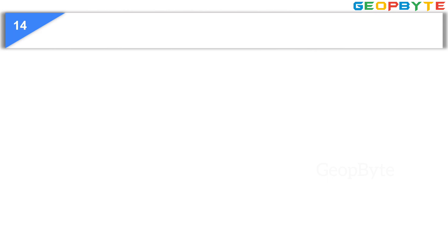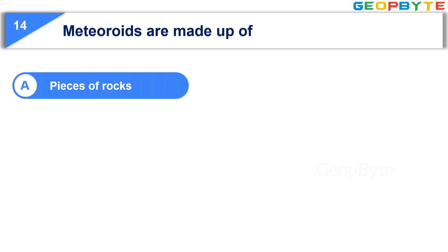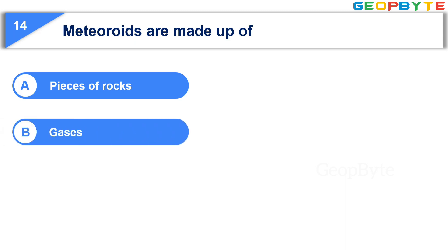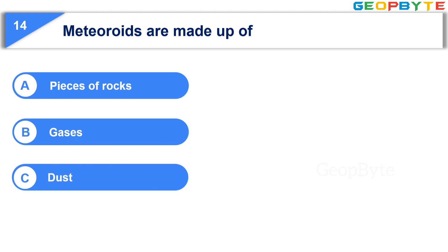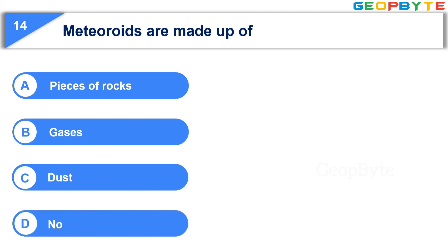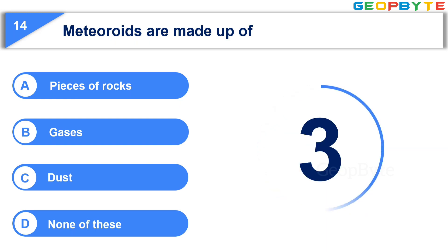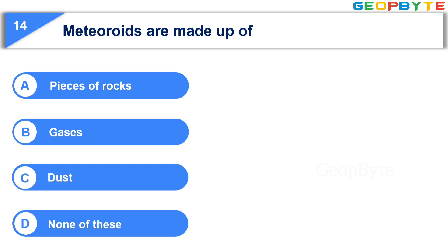The next question is: Meteoroids are made up of — Option A: Pieces of rocks. Option B: Gases. Option C: Dust. Option D: None of these. Your time starts now. Your time is up and the correct answer is Option A: Pieces of rocks.